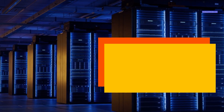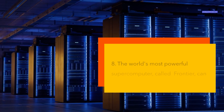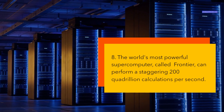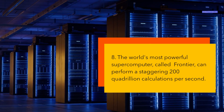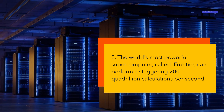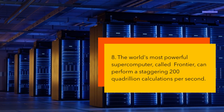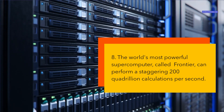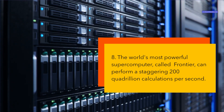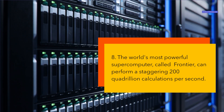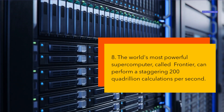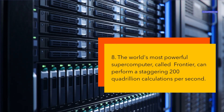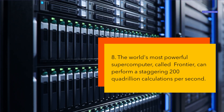The world's most powerful supercomputer, called Frontier, can perform a staggering 200 quadrillion calculations. A supercomputer is a computer that has extremely high performance and speed compared to ordinary computers. They are used for scientific research, engineering, simulation, artificial intelligence, and other complex tasks that require massive amounts of computing power. The current fastest supercomputer in the world is Frontier, located at the Oak Ridge National Laboratory in Tennessee, USA. It can perform 200 petaflops — 200 quadrillion floating-point operations — which is about 10 million times faster than an average laptop.